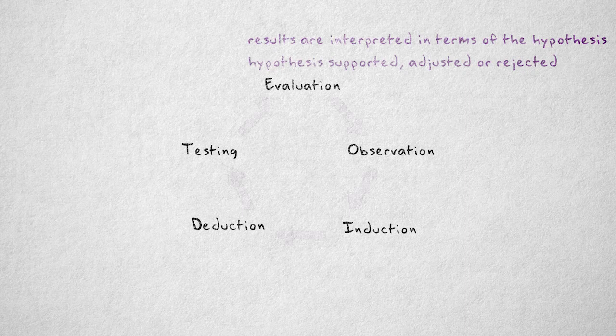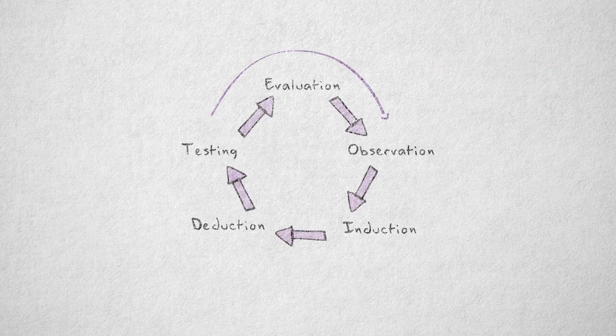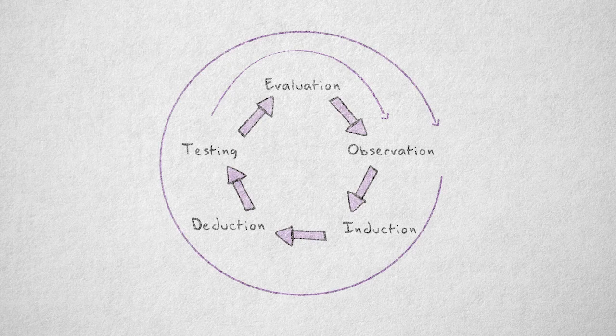The observations collected in the testing phase can serve as new, specific observations in the observation phase. This is why the process is described as a cycle. New empirical data obtained in the testing phase give rise to new insights that lead to a new run-through.